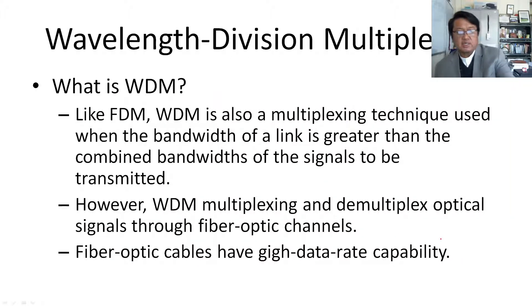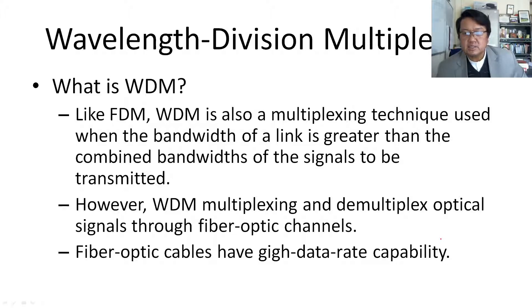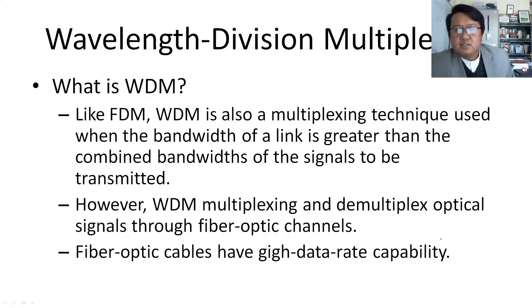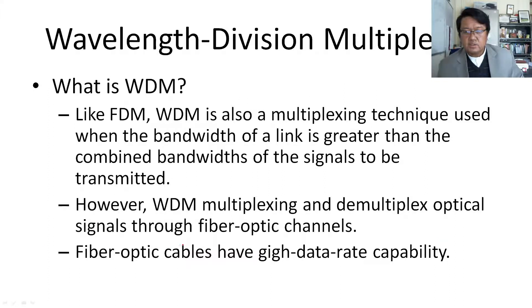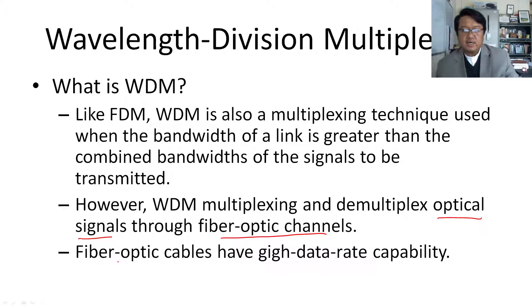Now coming to Wavelength Division Multiplexing. As mentioned earlier, FDM and WDM are more or less the same — both try to combine signals using different frequencies. WDM is a multiplexing technique used when the bandwidth of a link is greater than the combined bandwidth of the signals to be transmitted. However, in WDM we are dealing with optical signals — that means we are dealing with light through optical fiber channels. Optical fiber has a very high bandwidth and data capacity.